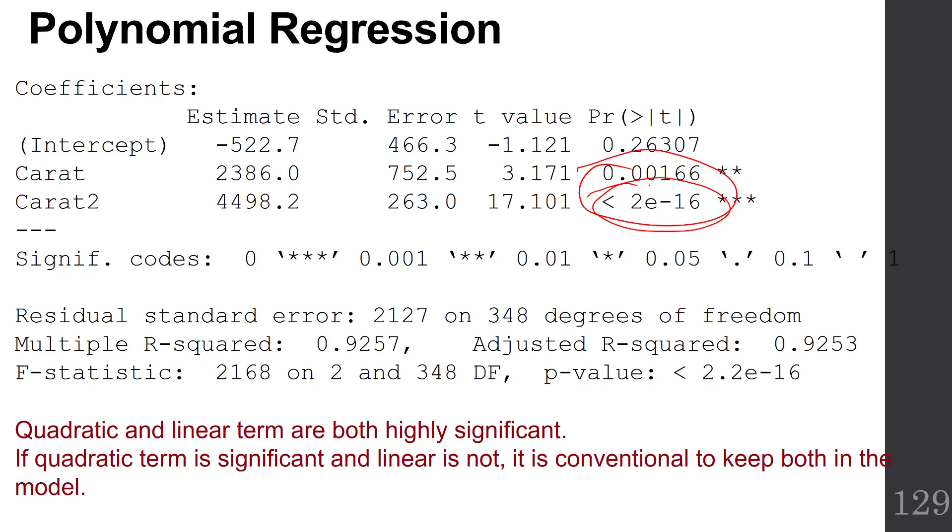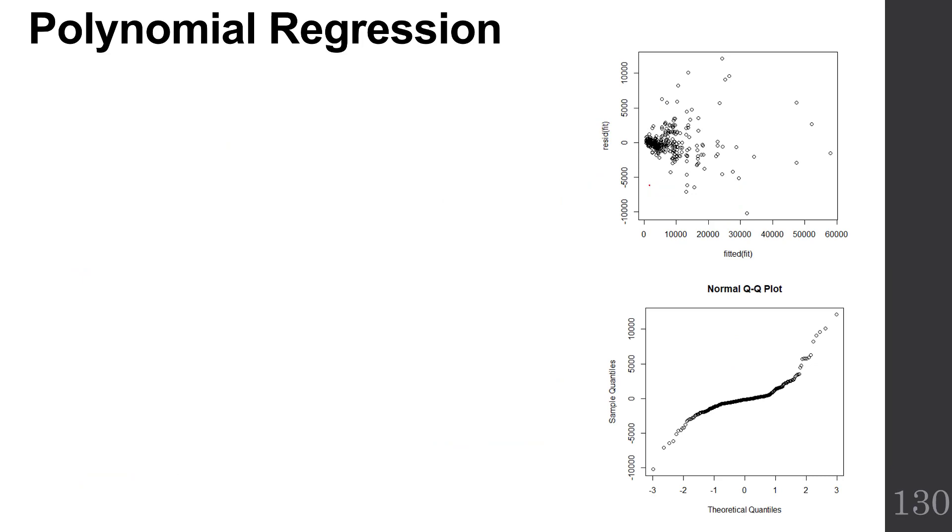Notice that if the quadratic term is significant and the linear one is not, that's not the case for us. But if you have a significant p-value for the squared term and a non-significant p-value for the not-squared term, it is conventional to keep both of them in the model anyway.